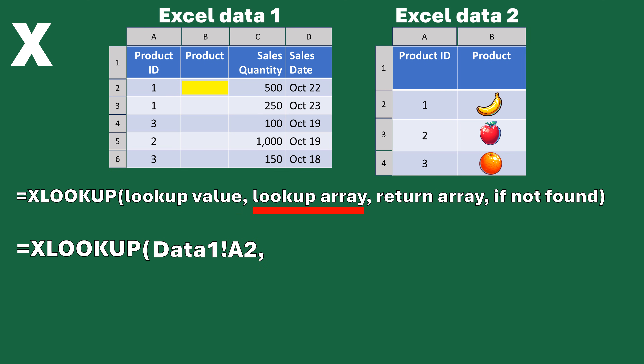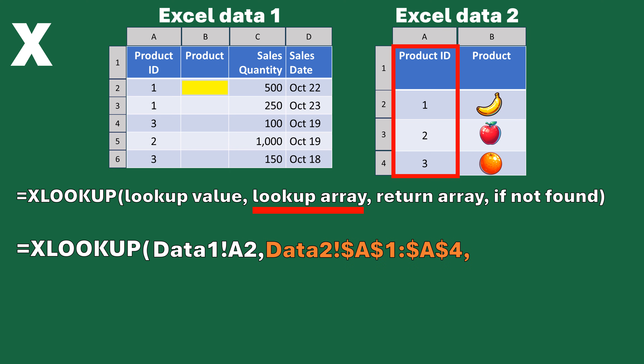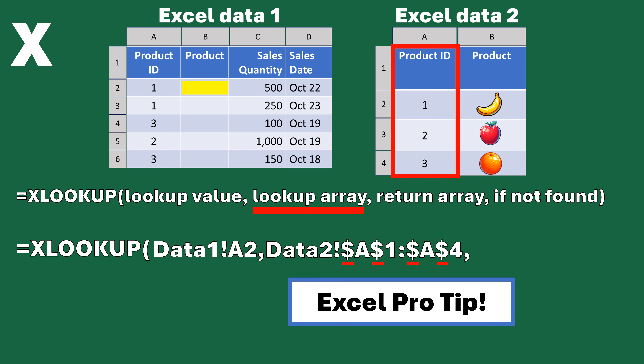Now we have to do the lookup array, and this is where changes happen. In VLOOKUP, we had to highlight the entire dataset of where we were looking. Now with XLOOKUP, we only need to highlight the column where we're looking — column A only. We don't need column B for this part; in fact, we don't want to. So we do A1 to A4, not A1 to B4. Once again, use the pro tip of putting dollar signs in there so that when we copy it, it doesn't lose the reference we've set.